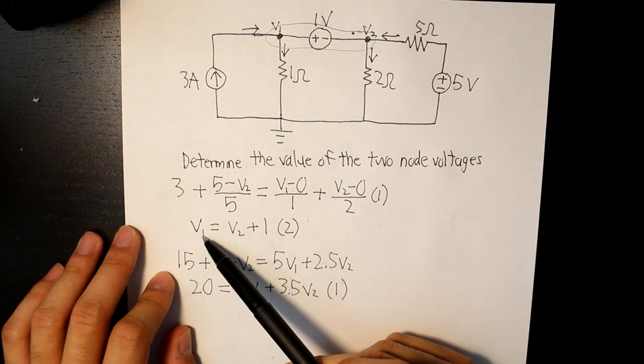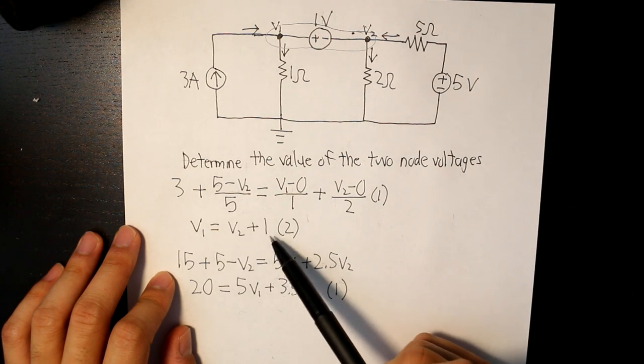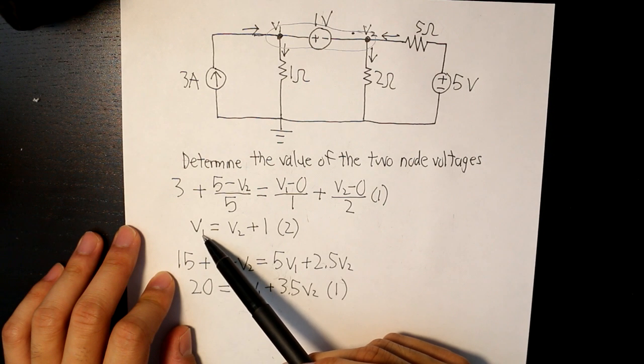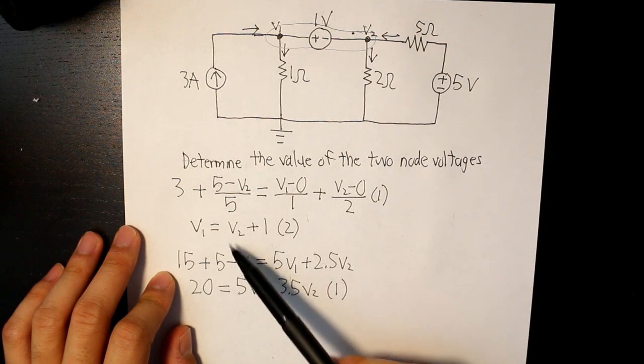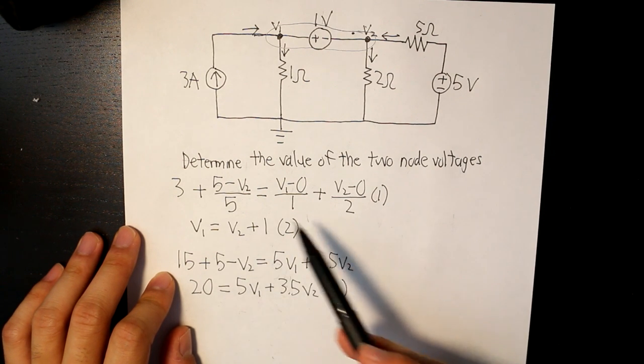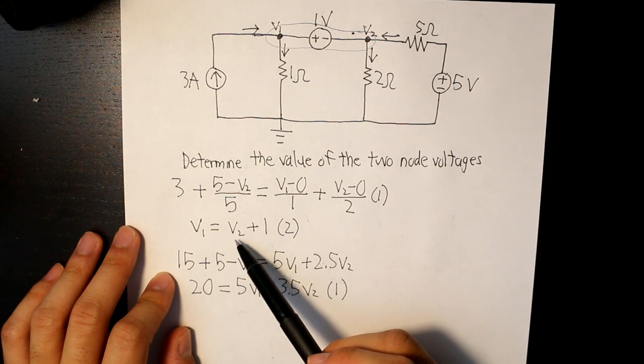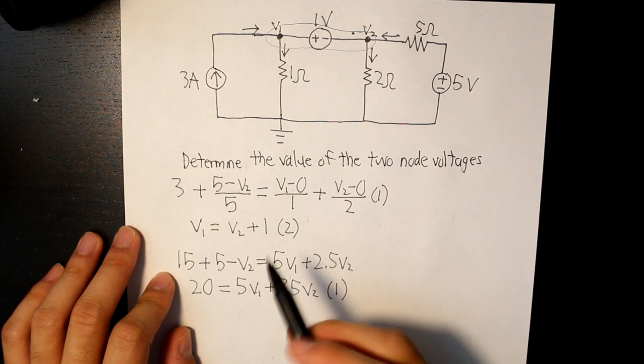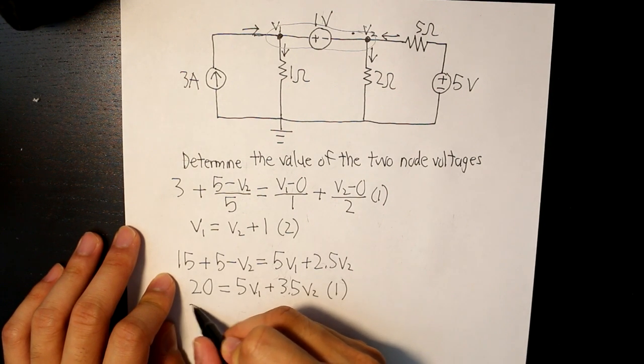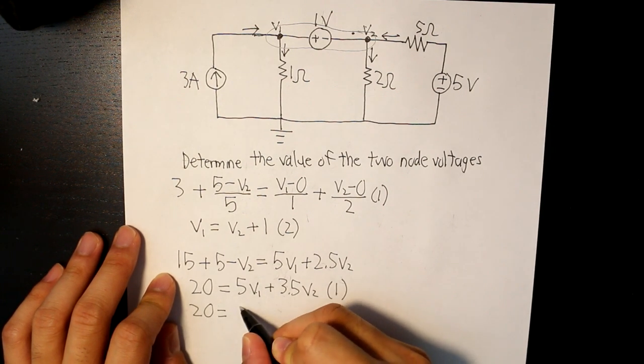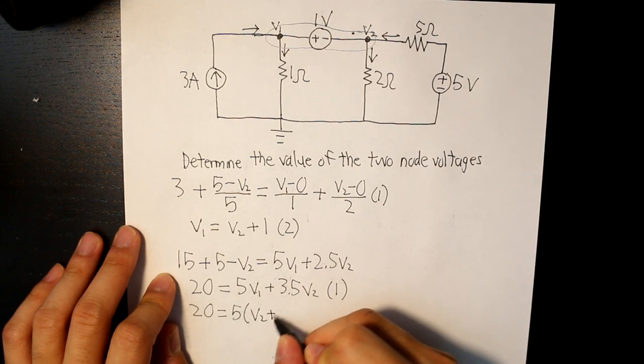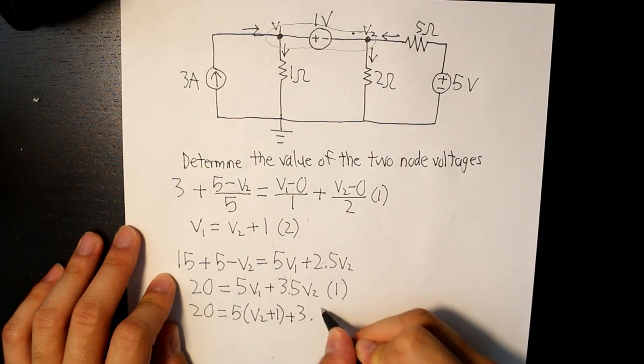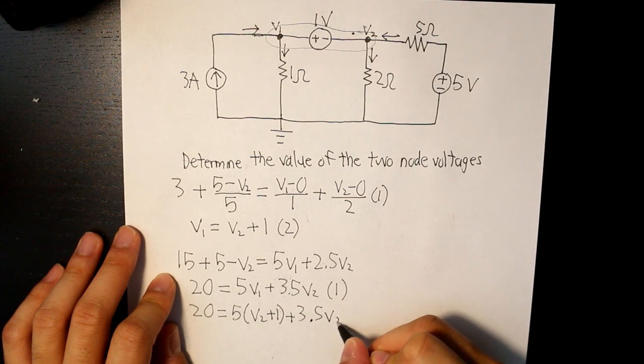Equation 2, we're given V1 is equal to V2 plus 1. So we can take V1 and then sub it in into equation 1. So V1 is equal to V2 plus 1, so this can be equal to V2 plus 1 as well. So we get 20 equals to 5 times V2 plus 1 plus 3.5V2.